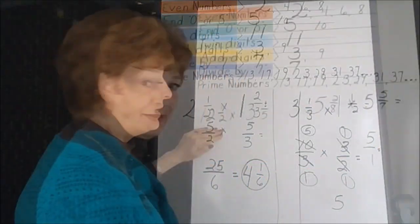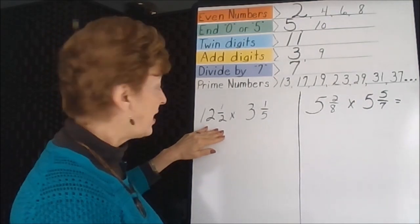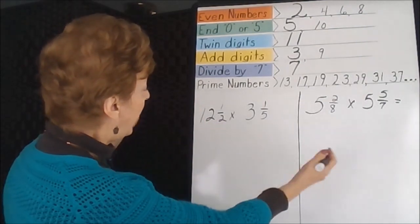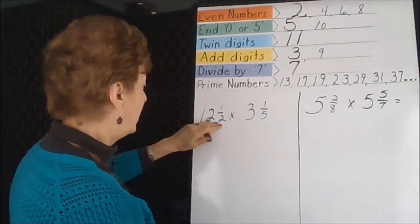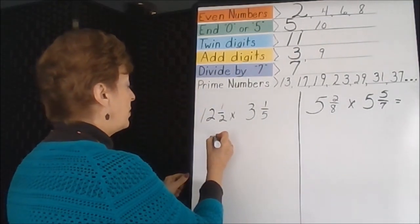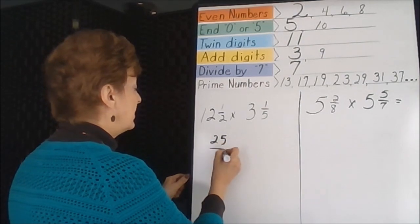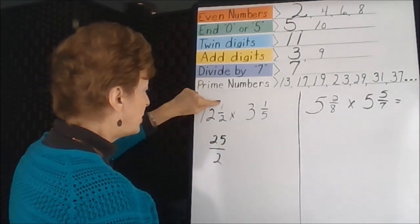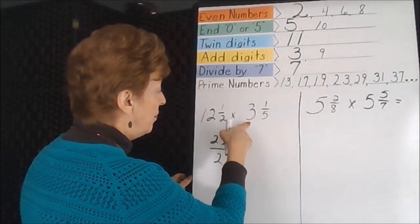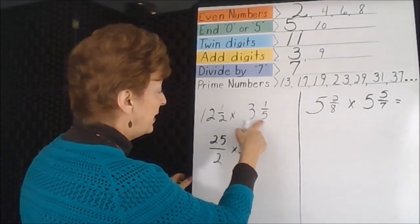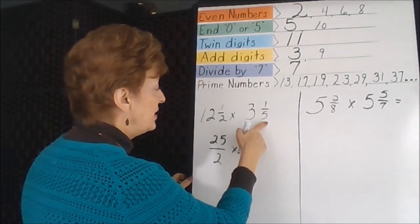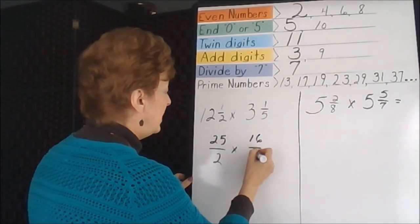We're going to multiply our numerators and get five over one. Any fraction that has a denominator of one means it's whole, so this further reduces to just plain five. Now for the next problem: twelve whole pies. If we divide them into halves, we can get twenty-four halves, and one more makes twenty-five halves. Two times twelve is twenty-four, so twenty-five halves. Three whole pies cut into fifths gives fifteen pieces — three times five is fifteen — plus one more is sixteen fifths.